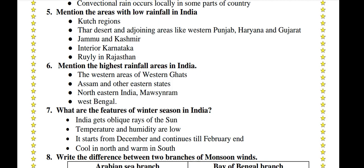What are the features of winter season in India? India gets oblique rays of the sun. Temperature and humidity are low. It starts from December and continues till the end of February. It is cool in the north and warm in the south.